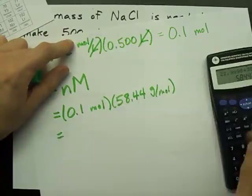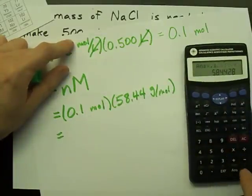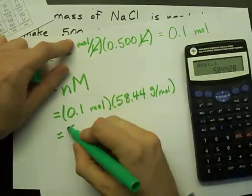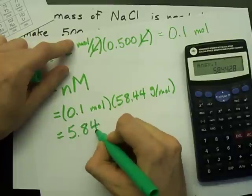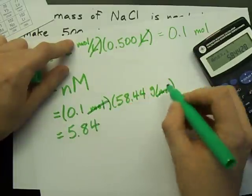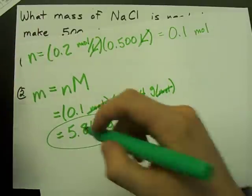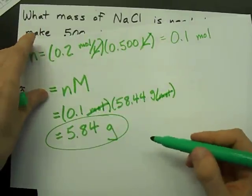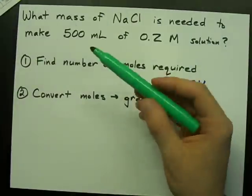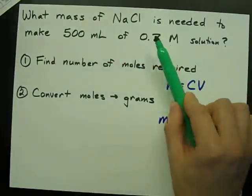When I actually multiply these two numbers, I get 5.84. My moles cancel out, I'm left with grams. So it takes 5.84 grams of NaCl if we're going to make this volume of this concentration.